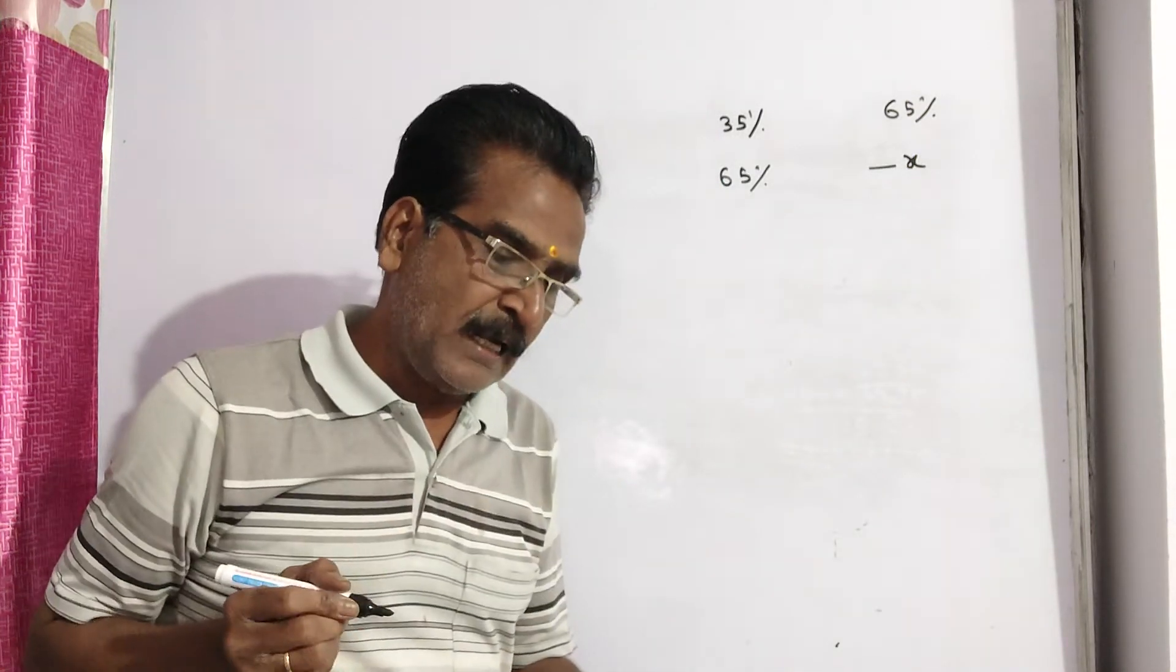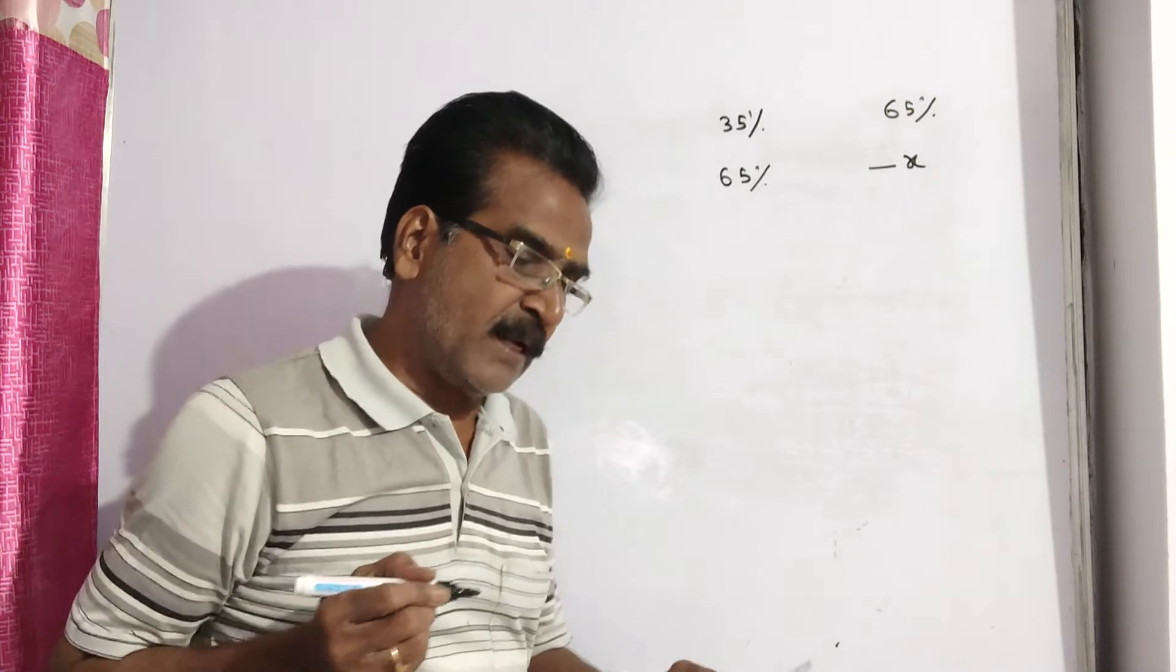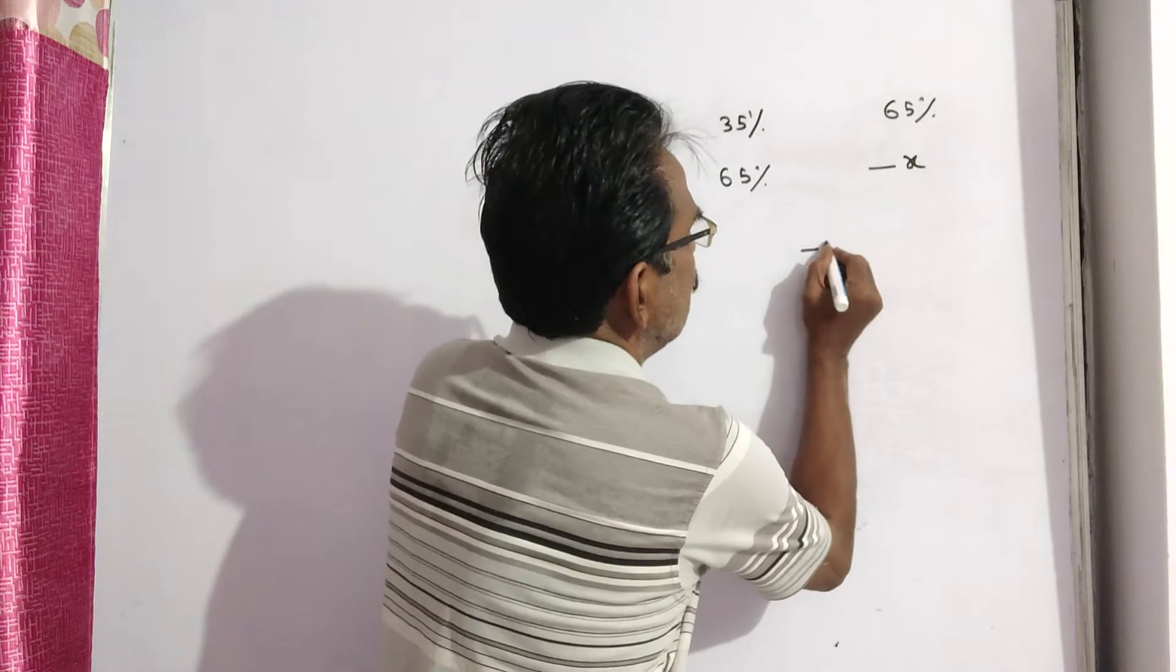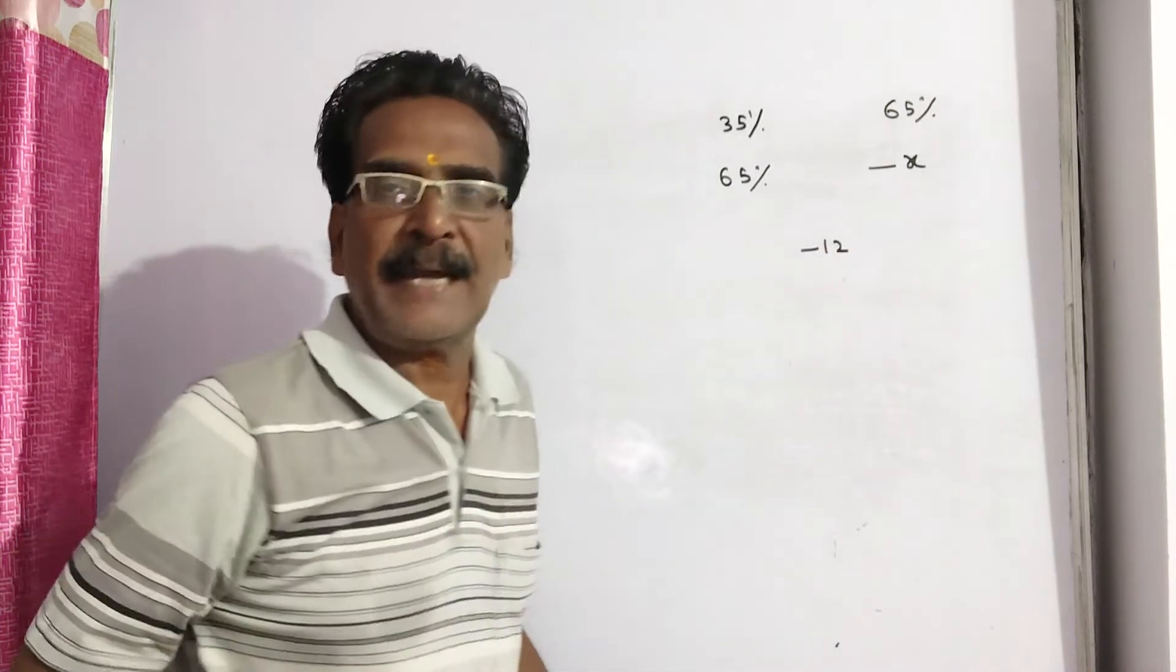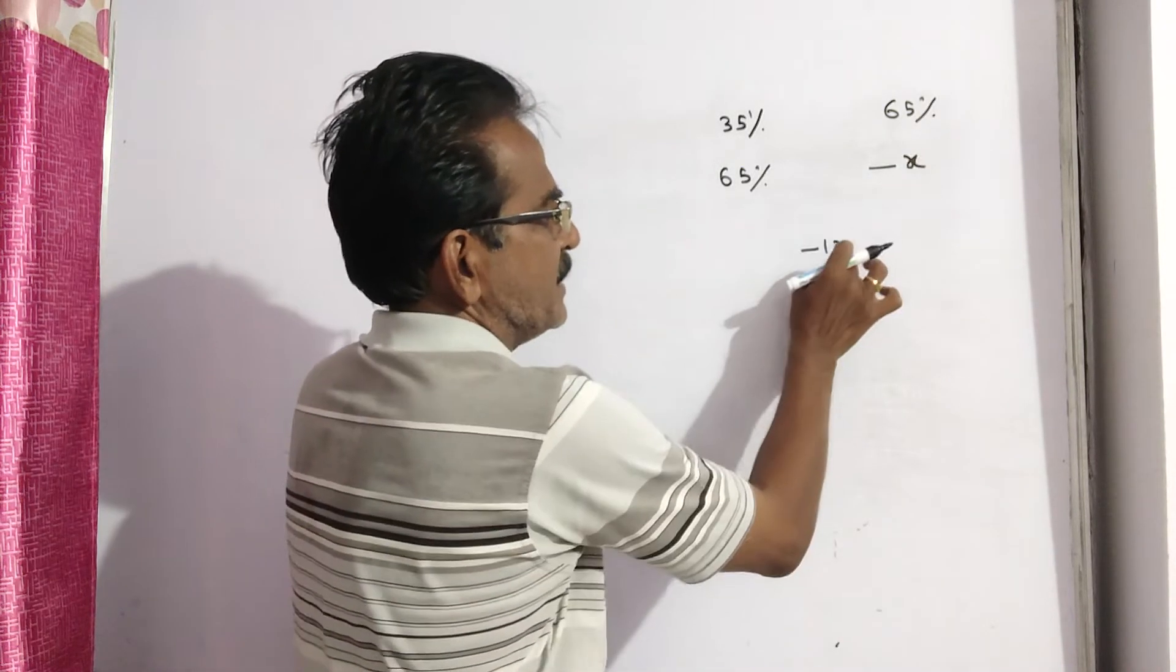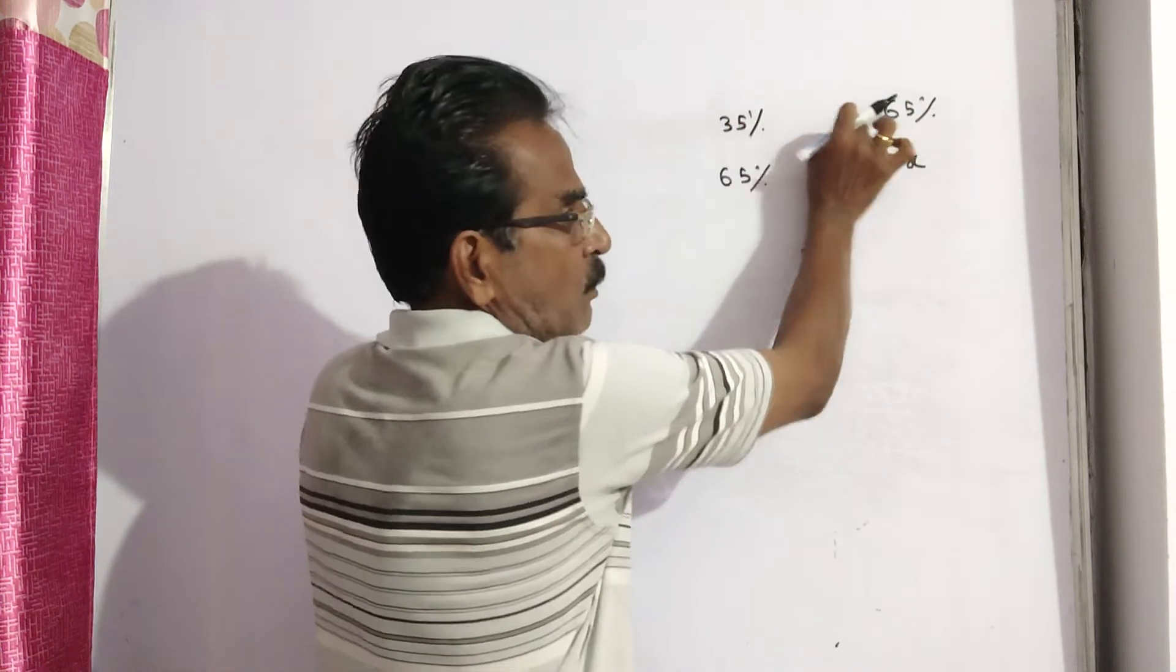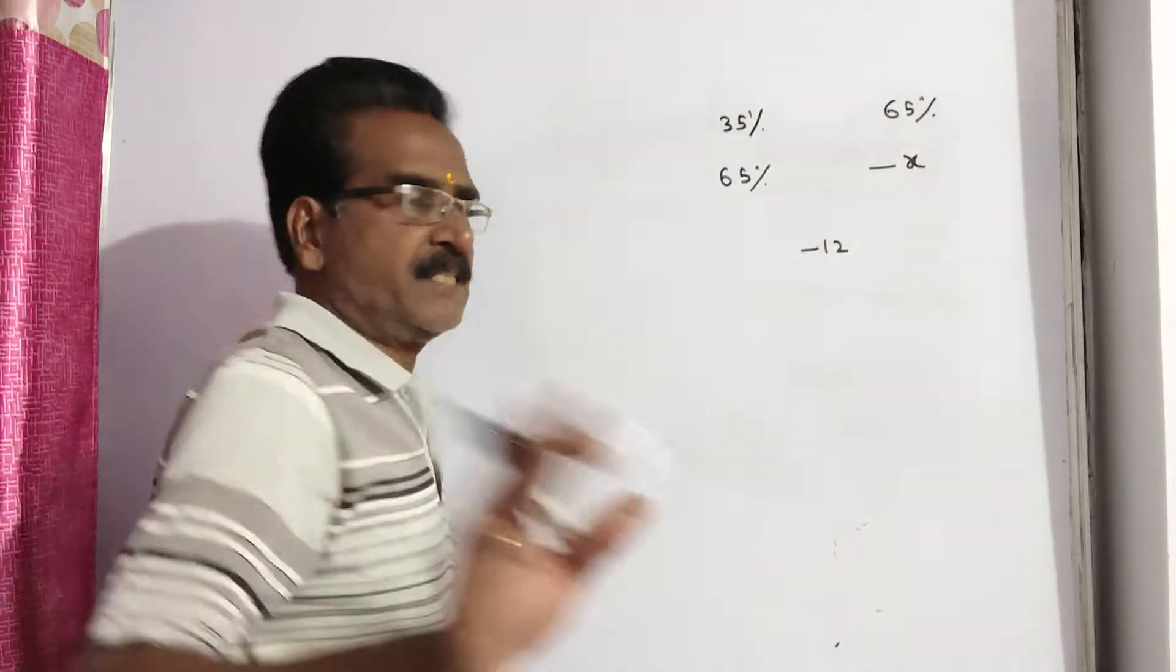And then overall, what is the overall? If the overall loss is 12%, so minus 12. Now this minus this by this minus this is equal to this is to this. Quantities ratio.